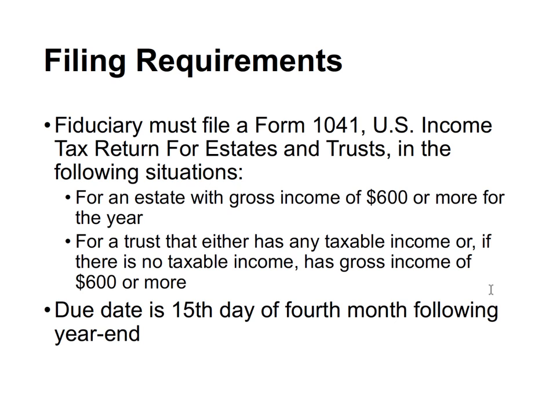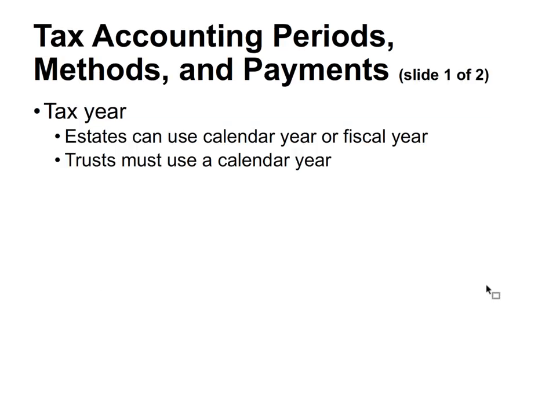For a trust that either has any taxable income, or if there's no taxable income but has gross income of $600 or more, filing is required. The due date is the 15th day of the fourth month following the year end — so April 15th for a calendar year, just like an individual. The tax year for an estate is either calendar year or fiscal year, while for a trust it's always the calendar year.